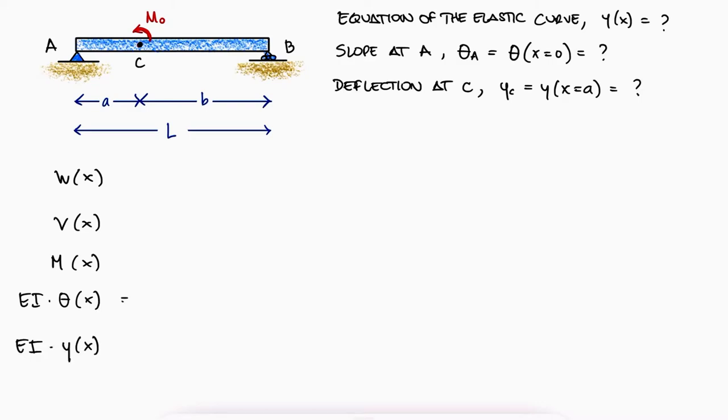To find the integration constants C1 and C2 that will appear in theta and y, we will use two boundary conditions. At x equal to 0, the beam cannot go up or down, therefore the deflection is 0. And the same is true of point B at x equal to L.